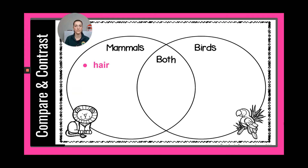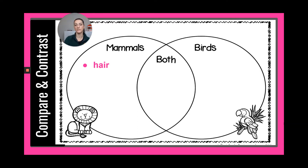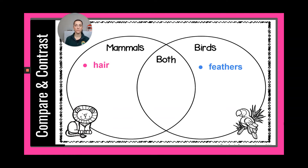You can pause the video if you need time to write. Now, what do birds have on their bodies that mammals do not? They have feathers. Everybody please write 'feathers' in the bird circle.